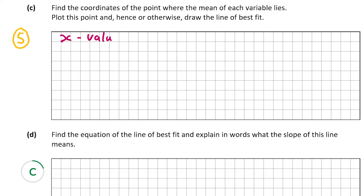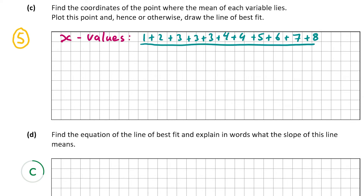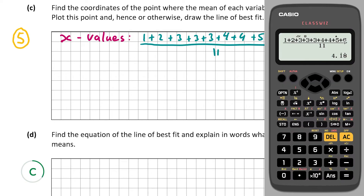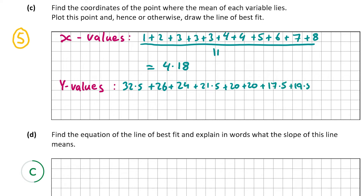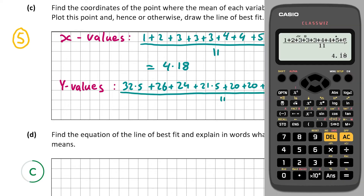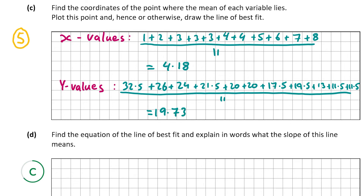To find the mean, add all the values together and divide by the total number of values. For the x-values: (1 + 2 + 3 + 3 + 3 + 4 + 4 + 5 + 6 + 7 + 8) ÷ 11 = 4.18. For the y-values: (32.5 + 26 + 24 + 21.5 + 20 + 20 + 17.5 + 19.5 + 13 + 11.5 + 11.5) ÷ 11 = 19.7272..., which we round to 19.73. So our coordinate is (4.18, 19.73).